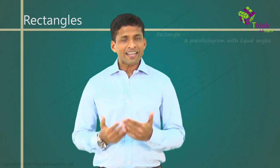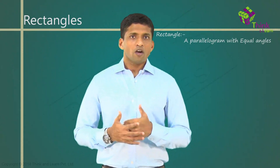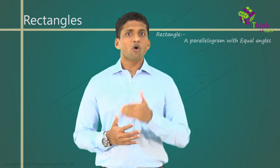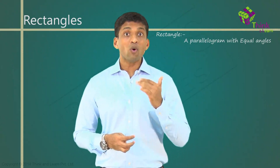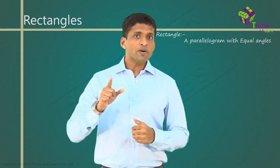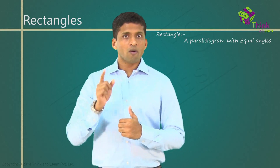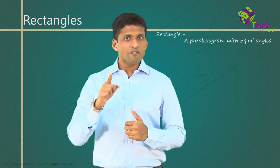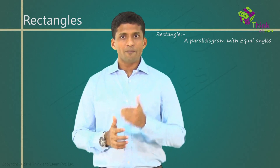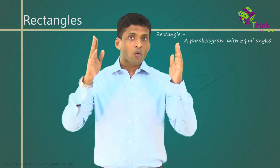Next, we will look at rectangles. So, what is a rectangle? A rectangle is also a parallelogram, but a special parallelogram with equal angles. Now, we know that a rhombus is a parallelogram with equal sides, whereas a rectangle is a parallelogram with equal angles.